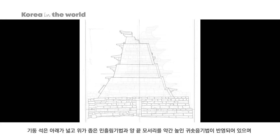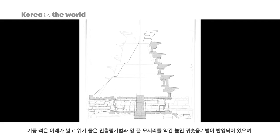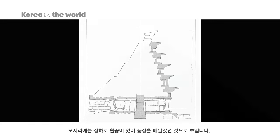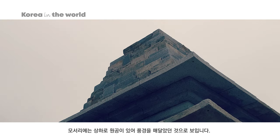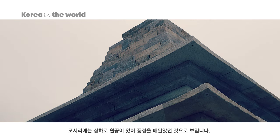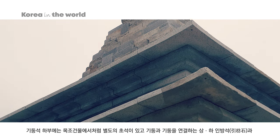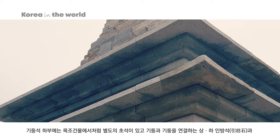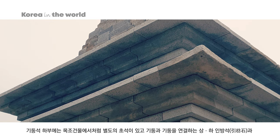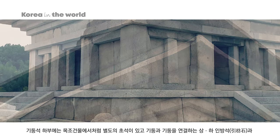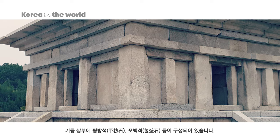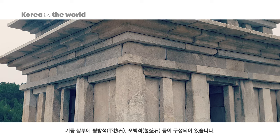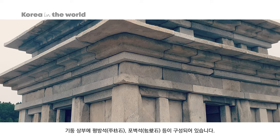기둥석은 아래가 넓고 위가 좁은 민흘림 기법과 양 끝 모서리를 약간 높인 귀솟음 기법이 반영되어 있으며 모서리에는 상하로 원공이 있어 풍경을 매달았던 것으로 보입니다. 기둥석 하부에는 목조 건물에서처럼 별도의 초석이 있고 기둥과 기둥을 연결하는 상하 인방석과 기둥 상부의 평방석, 포벽석 등이 구성되어 있습니다.